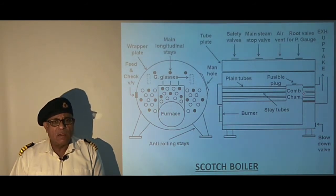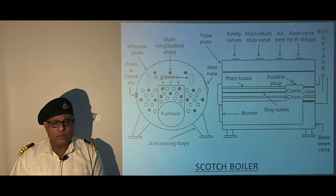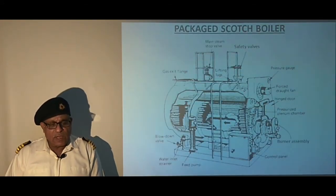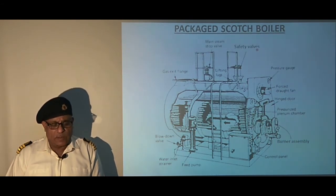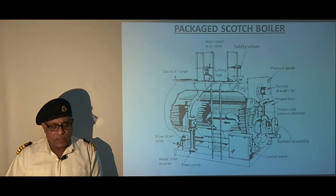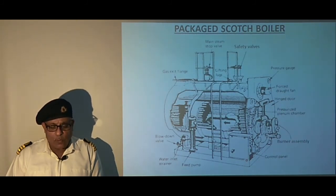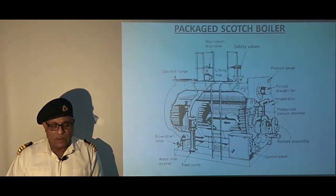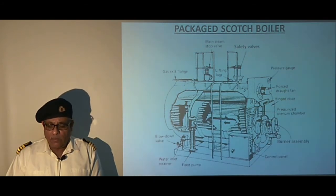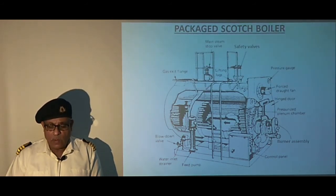In the subsequent slide we see a package type boiler, which is usually provided on ships. The sketch shows the package arrangement for this Scotch boiler, meaning the boiler along with its auxiliary machinery and associated components are all mounted on a common base plate. We can see the feed pump, the control panel, the forced draught fan, and other mountings.